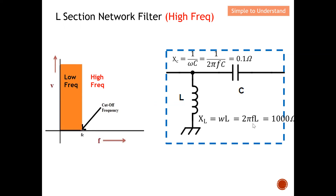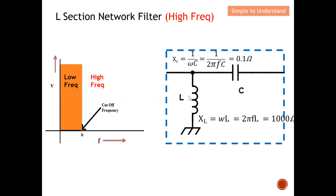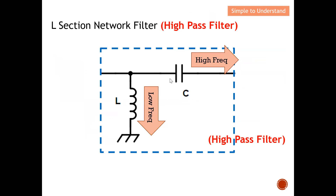At high frequency, the capacitor's impedance becomes very small, allowing signals to pass through the series path. The inductor's impedance becomes very large at high frequency, preventing the shunt path from conducting. So all high frequency components pass through, while low frequency components are shunted to ground. Therefore, a series C with a shunt L is a high pass filter.